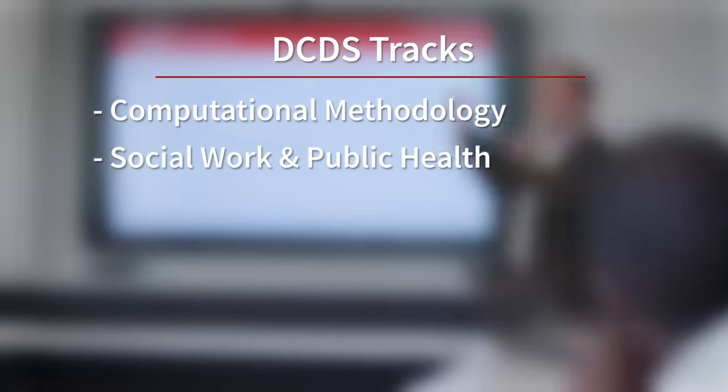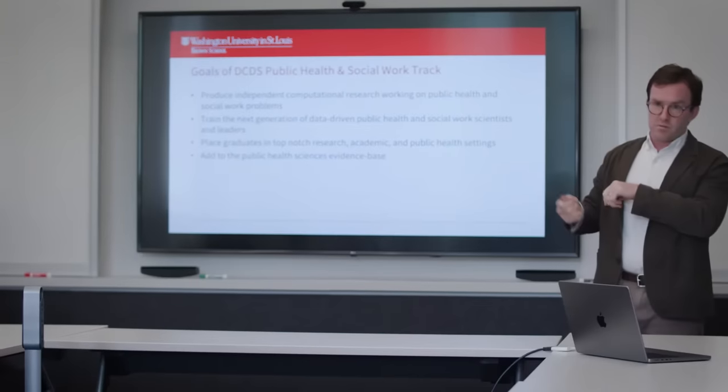DCDS started with four tracks: computational methodologies, social work and public health, political science, and psychology. These allow collaborations across campus in key domain areas. The common component is data-intensive social science. Some students join the program knowing exactly what they want to do, but most do not. They come in knowing that they want to work at this intersection to make a difference in the world, but how exactly, they haven't made up their minds yet.